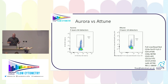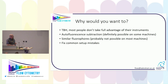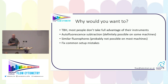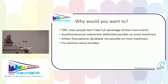The whole point of unmixing is you have more detectors than parameters — it's an over-determined system. Any system that has fewer fluorophores than detectors is over-determined, so you can do the unmixing. The reason you'd want to do it is that most people, even on the Auroras, really don't utilise the entire capability of the machine. And because of that, you can do interesting computational tasks such as autofluorescence subtraction, unmixing similar fluorophores, and fixing common setup mistakes.